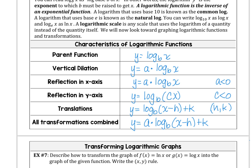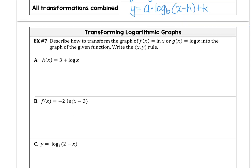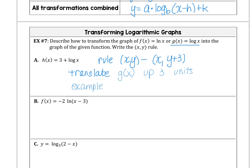So let's jump into writing x-y rules for those transformations. In this first example, the rule would be to keep the x and add 3 to the y. So verbally, what we did was we translated the g of x graph 3 units up. Let's use the ordered pair 1,0, which is the x-intercept on the parent function. That ordered pair would move to 1,3.